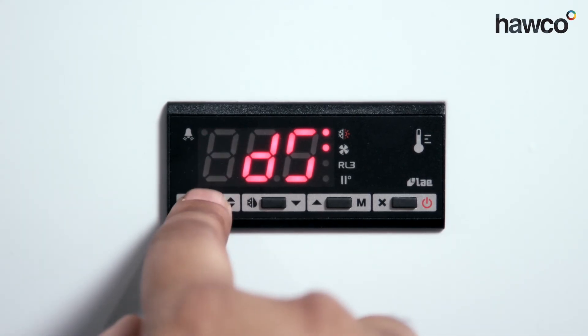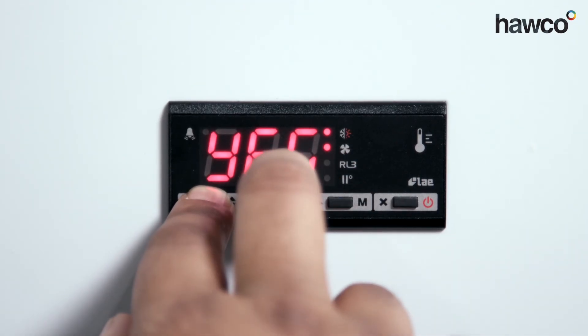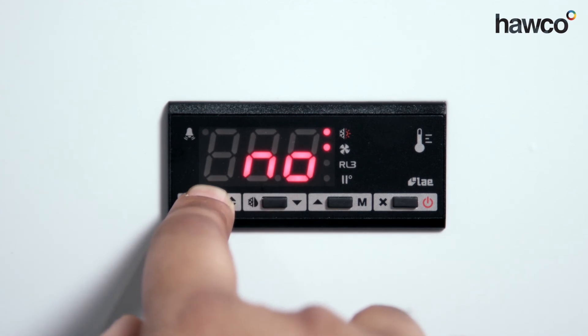Next is DS for door switch enabling. We don't have a door switch, set to no. If we have a door switch, you switch to yes. On this occasion, we're going to leave it at no.